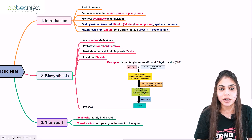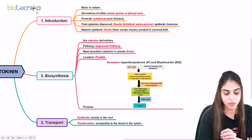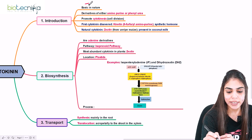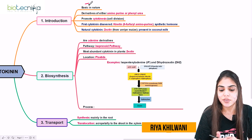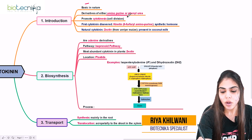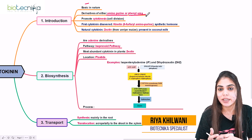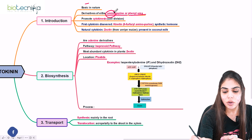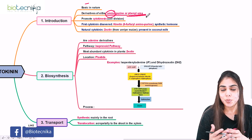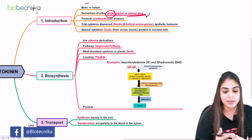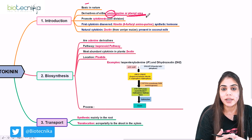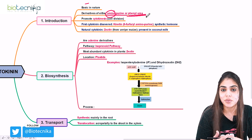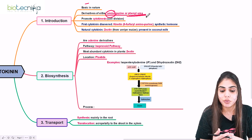Coming to the introduction of cytokinin phytohormone: cytokinin is basic in nature and is derived from aminopurine or phenyl urea. Purine is a nucleotide base. These aminopurine or phenyl urea derivatives promote the process of cytokinesis in the plant cell, and that is why they are called cytokinin — a molecule that promotes cytokinesis, or simply, cell division.